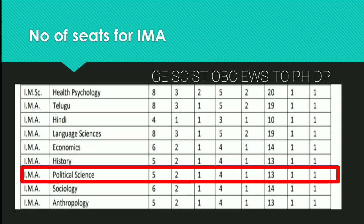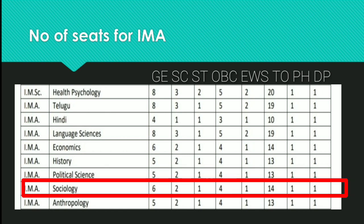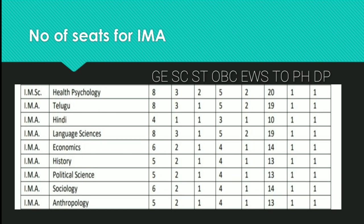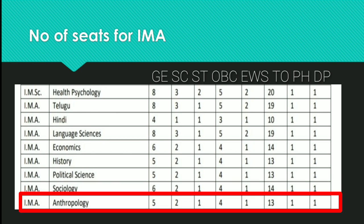For Political Science: General 5, SC 2, ST 1, OBC 4, EWS 1, Total 13, PH 1, Defense 1. For Sociology: General 6, SC 2, ST 1, OBC 4, EWS 1, Total 14, PH 1, Defense 1. For Anthropology: General 5, SC 2, ST 1, OBC 4, EWS 1, Total 13, PH 1, Defense 1.